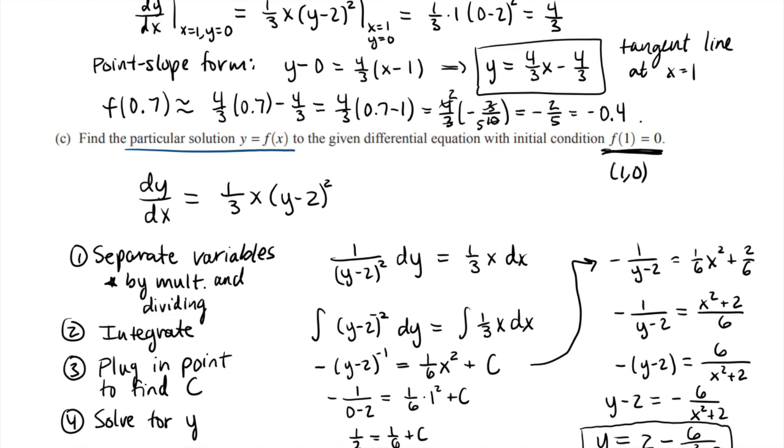Just to check, you could plug in again this point (1,0) and make sure that works. In other words, if I plug in 1 for x, do I get 0 for y? When I plug in 1 on the bottom, I get 3. 6 over 3 is 2. 2 minus 2 is 0, so that's good. That checks out.